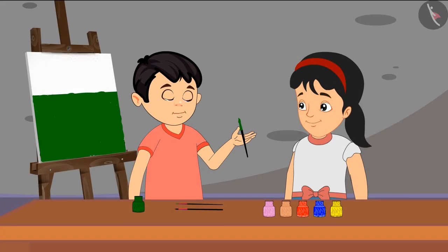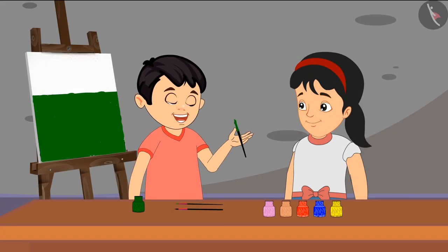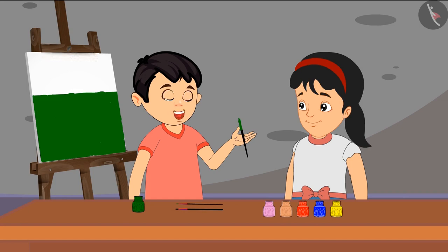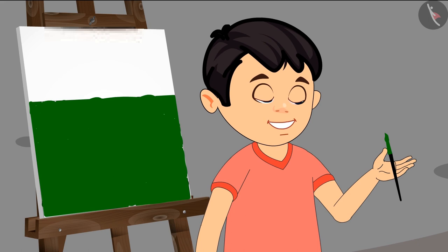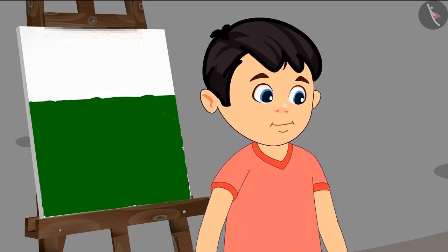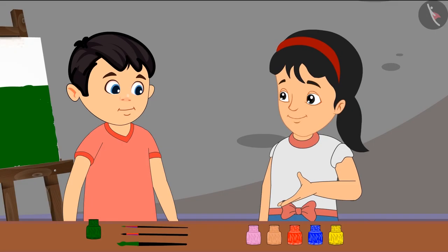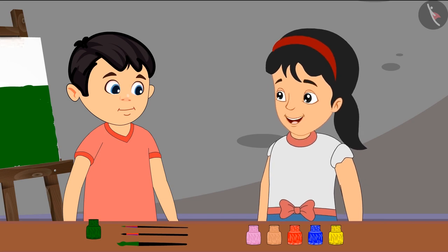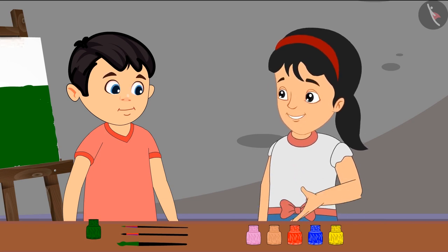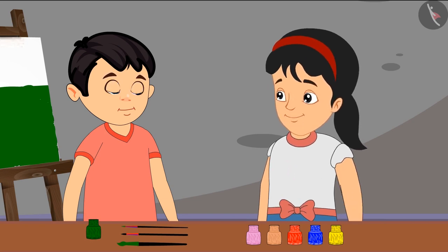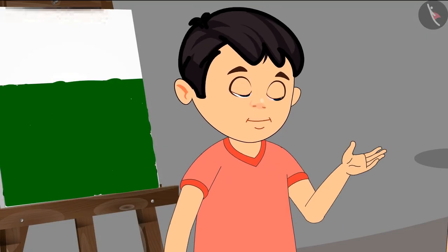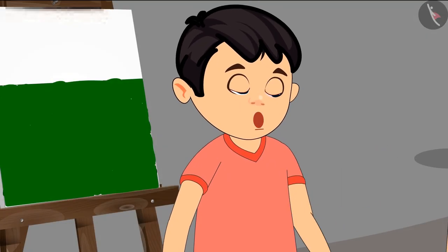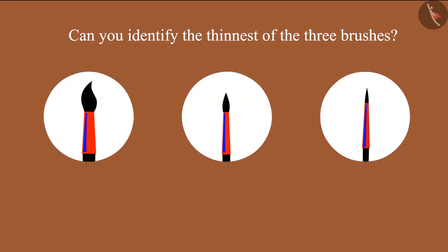Oh wow, Pinky! I was able to color the field quickly using the thickest brush. Yes, but this thick brush cannot be used to make the plant. You are right, Chotto, so you can take the thinnest brush to make the plant. Yes, it will be easy to color the plant with a thin brush, but which is the thinnest brush, Pinky?